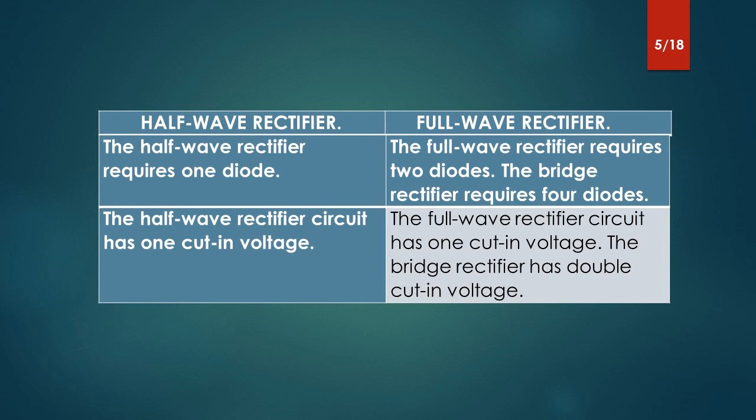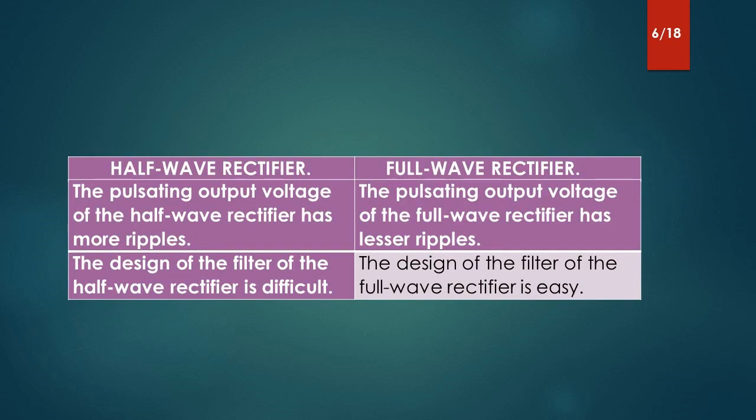The half-wave rectifier circuit has 1 cut-in voltage, the full-wave rectifier circuit has 1 cut-in voltage, and the bridge rectifier has double cut-in voltage. The pulsating output voltage of the half-wave rectifier has more ripples. The pulsating output voltage of the full-wave rectifier has lesser ripples.